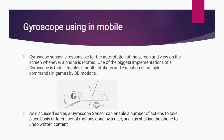Gyroscope use in mobile: The gyroscope sensor is responsible for the auto-rotation of the screen and view on the screen whenever a phone is rotated. One of the biggest implementations of a gyroscope is that it enables smooth rotations and execution of multiple commands in games by 3D motions. A gyroscope sensor can enable a number of actions based on different sets of motions done by a user, such as shaking the phone to undo written content.